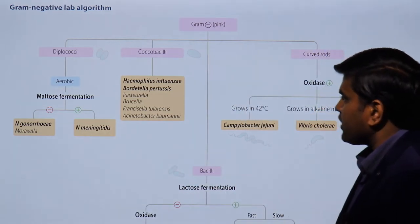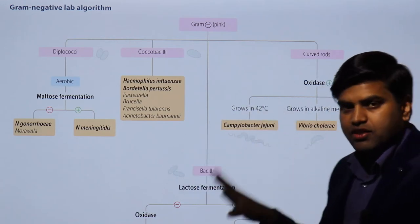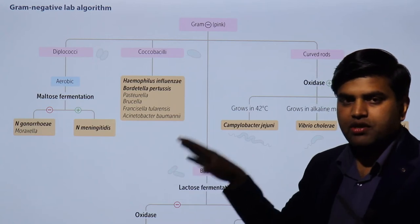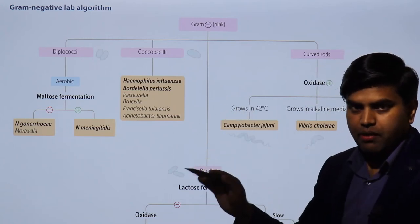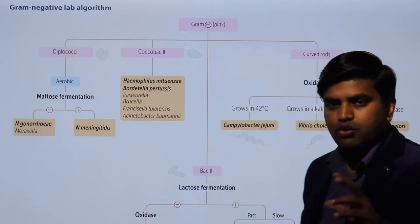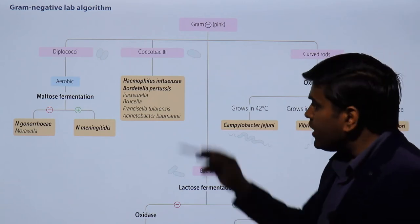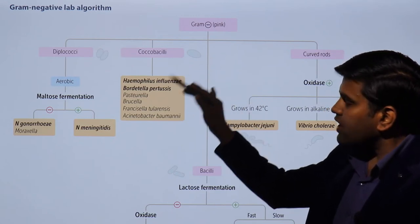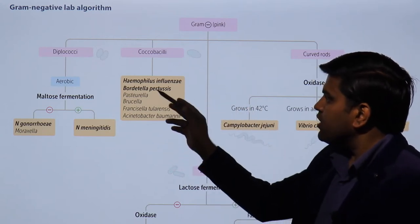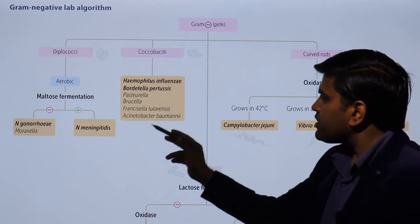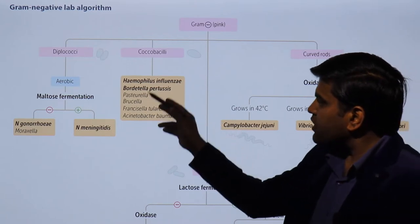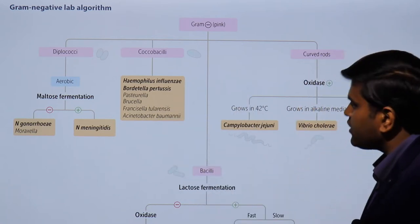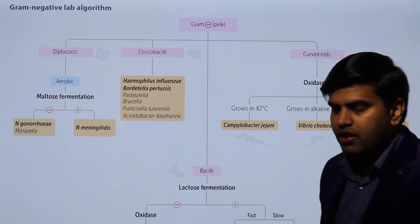Now let's come to the bacilli group, which is larger. Among bacilli, there are coccobacilli, true bacilli, and curved rods. Coccobacilli examples are: Haemophilus influenzae, Bordetella pertussis, Pasteurella, Brucella, Francisella tularensis, and Acinetobacter baumannii. Four of them are easy to remember as the 'ella sisters': Bordetella, Pasteurella, Brucella, Francisella. Plus Haemophilus influenzae and Acinetobacter baumannii are also coccobacilli.